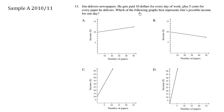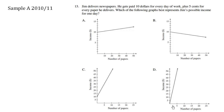We know that Jim is paid $10 regardless of how many papers he delivers, so right off the bat we know the income should start at $10 even when the number of papers is zero. So A is a possibility, so is B, so is C. However, D is not a possibility.